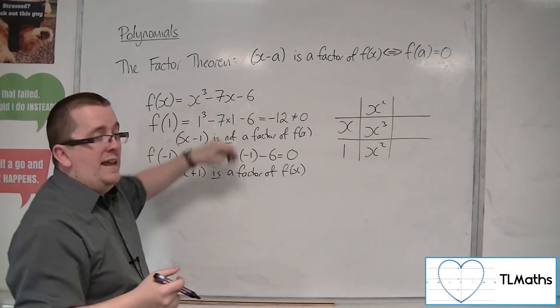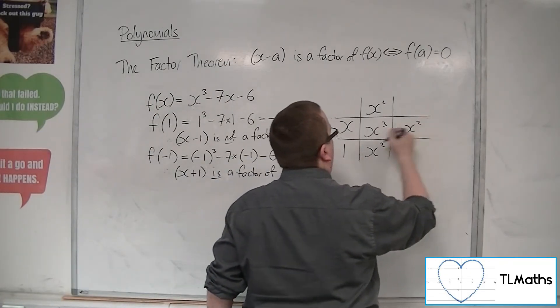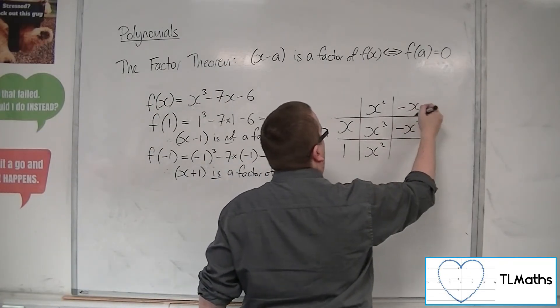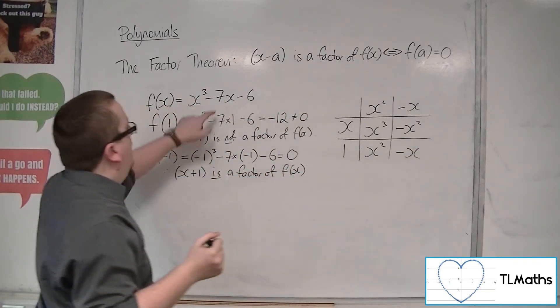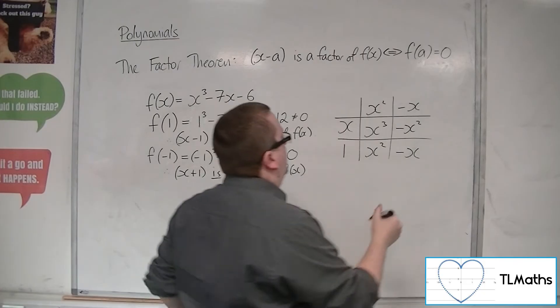I don't need any x squared, so I need to take away an x squared there. x into that go minus x. Minus x times 1 is minus x.